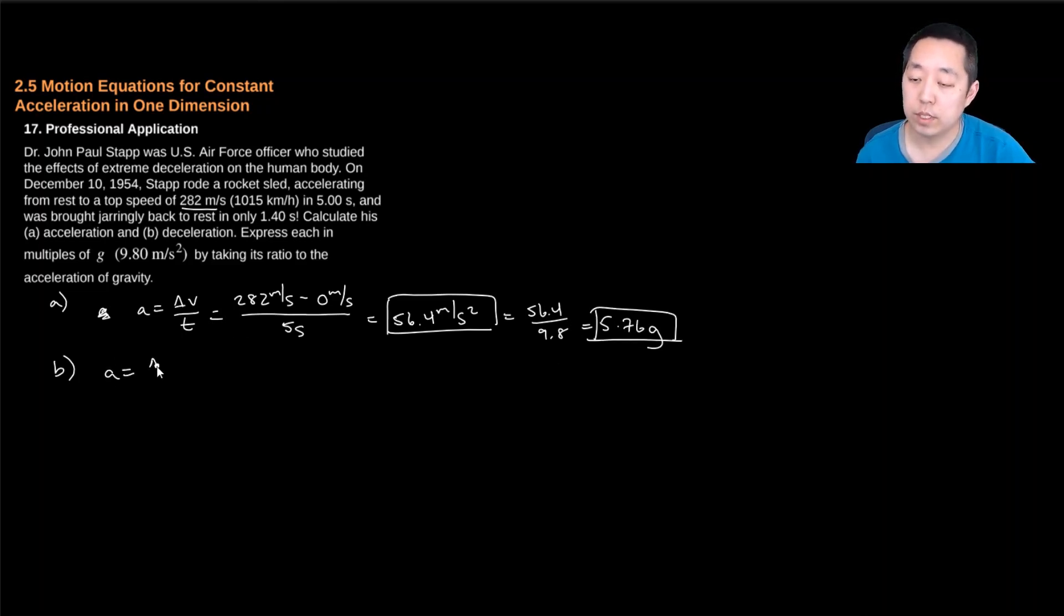And here we have this, it's the same equation, change in velocity over time, but this time he ends at rest, and his initial velocity, or the velocity he's decelerating from, is 282. And he does this in 1.4 seconds,